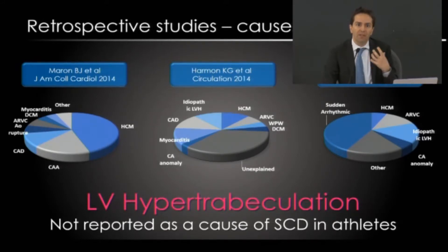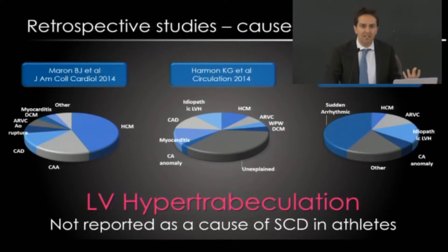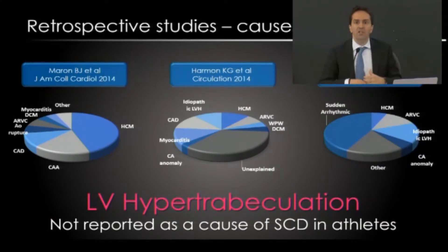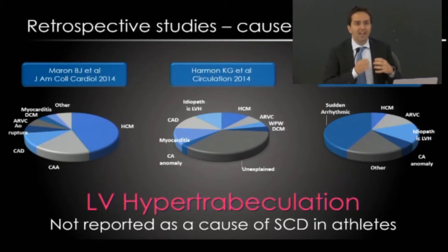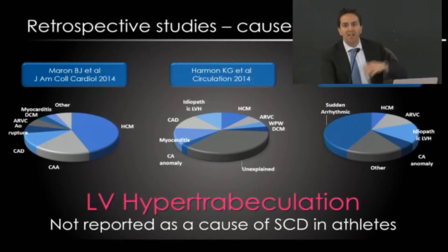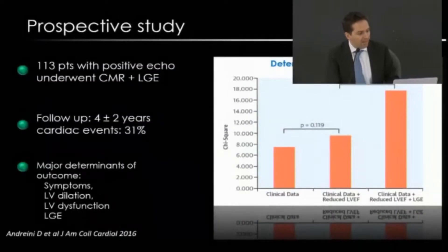Sudden cardiac death is not an early manifestation of this disease. People may die suddenly only if they develop a large left ventricle, significant left ventricular systolic dysfunction, and symptoms. So in symptomatic patients, sudden cardiac death may occur, but in asymptomatic individuals it is extremely rare. The most important epidemiological studies did not report sudden cardiac death in athletes with this finding.